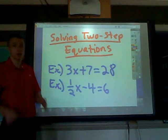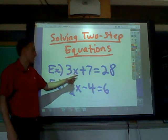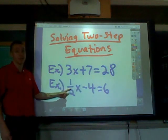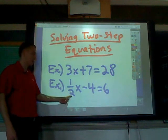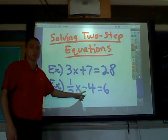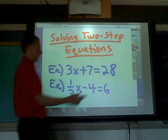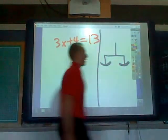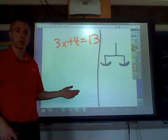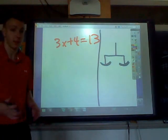Notice there are two steps here — multiplication, 3 times x, plus 7. Then here we have division: 1 divided by 2x minus 4, so here's subtraction. There are two steps right there. For these we're going to be solving for our variable x, or any other variable that we have.